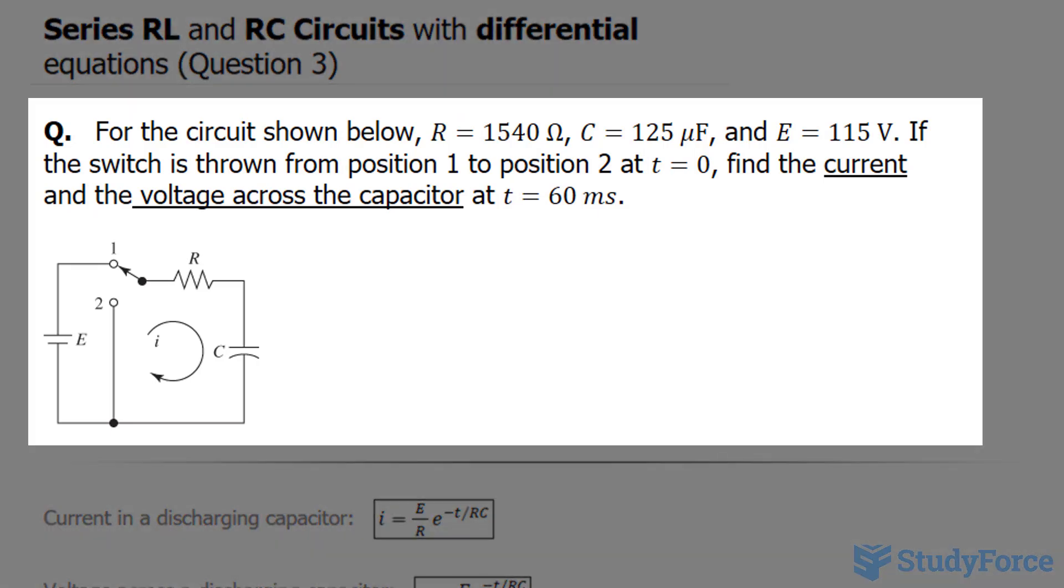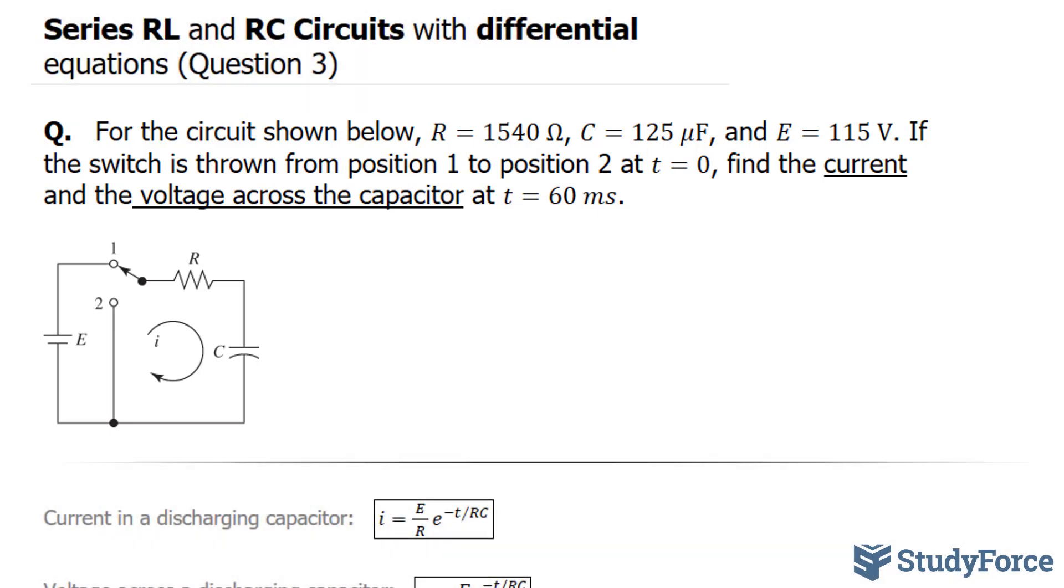The question reads, for the circuit shown below, resistance is equal to 1540 ohms, capacitance is equal to 125 microfarads, and E, our voltage source, is equal to 115 volts. If the switch is thrown from position one to position two at time equals zero, find the current and the voltage across the capacitor when the time is 60 milliseconds.